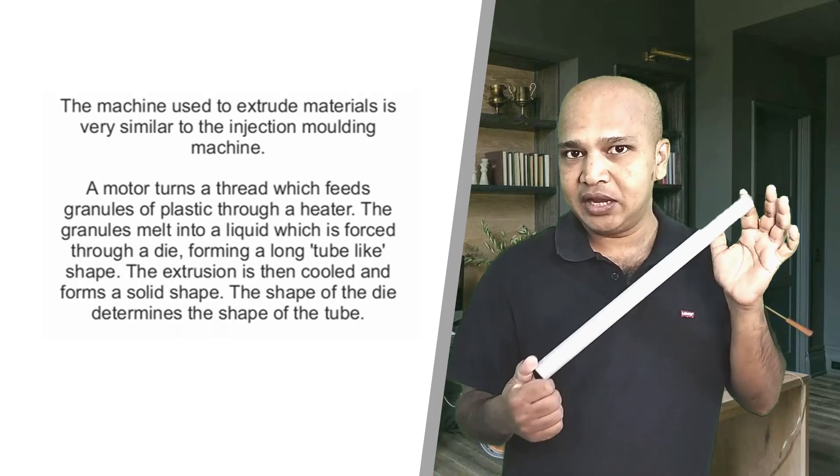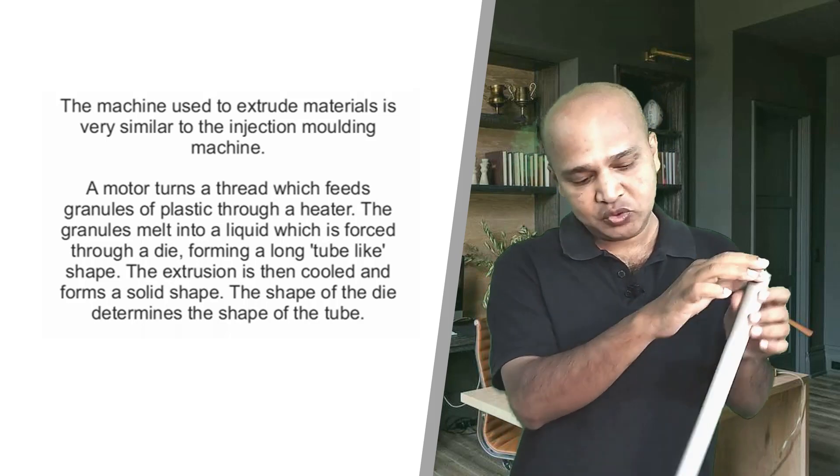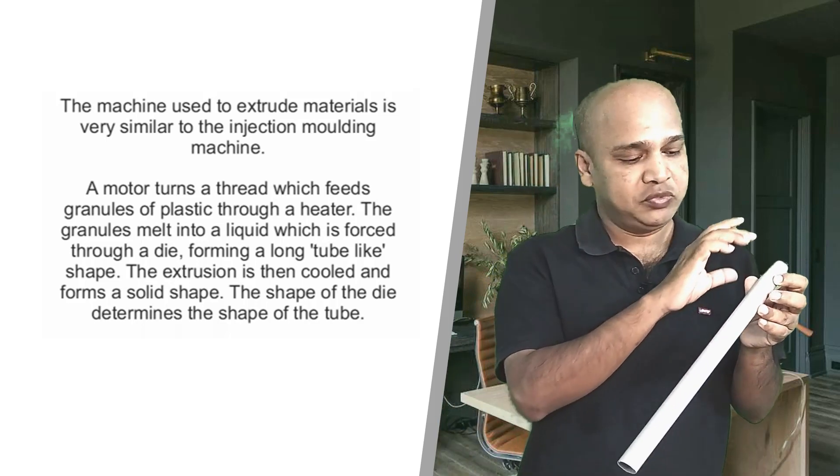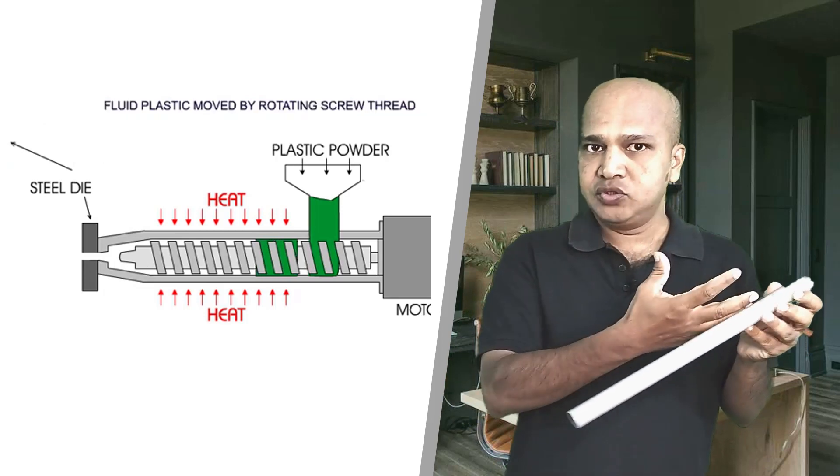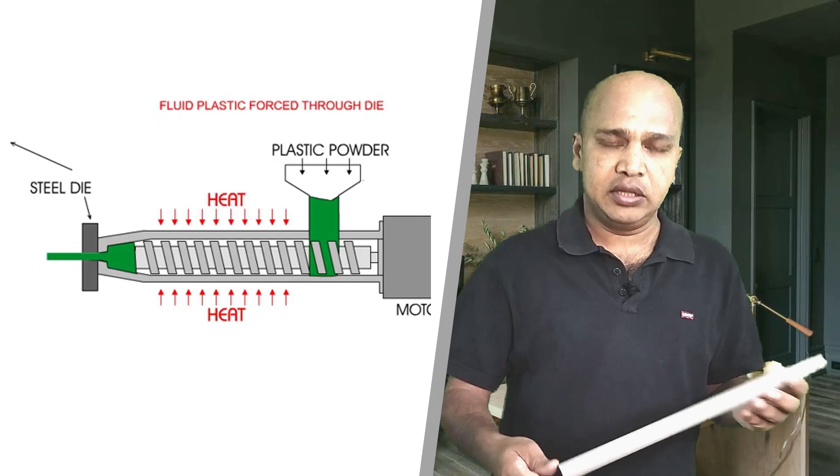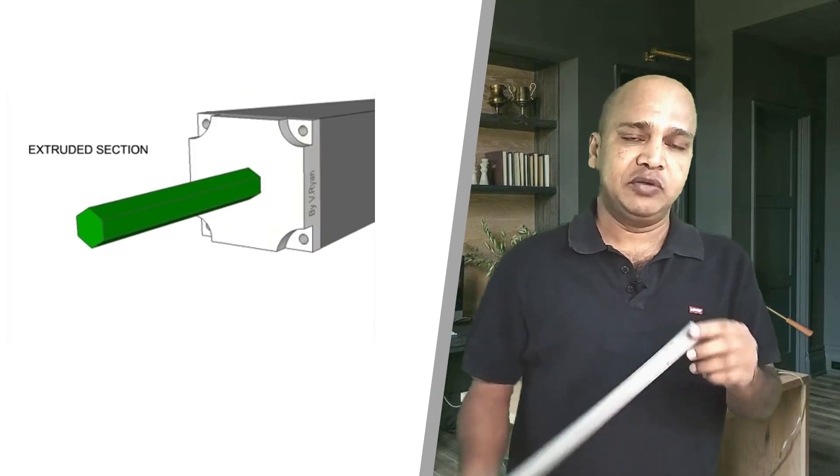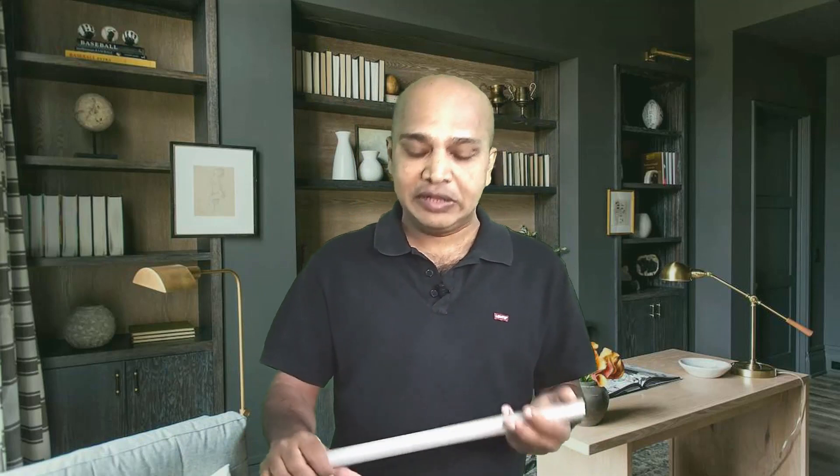For example, if we consider the parts out of this process are like PVC pipes. You can see that one in my hand, so it has a cross section which is uniform throughout the length. You can manufacture these pipes as long as you want. Another example I can give you is straws which we use for drinking juices.